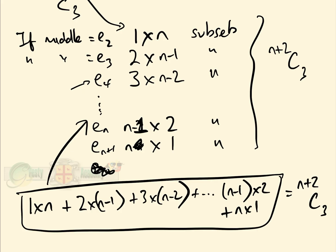So by counting 3-element subsets of n+2 elements in two different ways, we've shown that this summation equals C(n+2, 3). I hope you found this interesting. If you did, please like this video and subscribe to the Gresham Academy YouTube channel. Thank you.